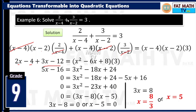Take note: extraneous roots are values of x that make the denominator 0. What makes the denominator 0 here? x equals 4 and x equals 2. So if you had gotten x equals 4 or x equals 2 as solutions, those would be extraneous roots — meaning they are not actual solutions to the given equation transformable to quadratic equations.